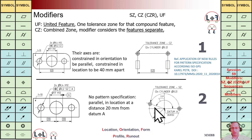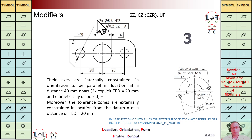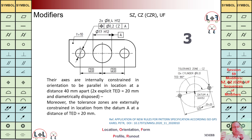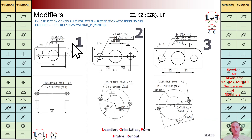In example three, the same geometry is used but with CZ with respect to datum A. We have combined zone for these two features. The distance between them is 40, they should be parallel, and they have a location constraint. They can rotate but cannot go left and right. The angular relationship between these two holes is 180 degrees, or zero.